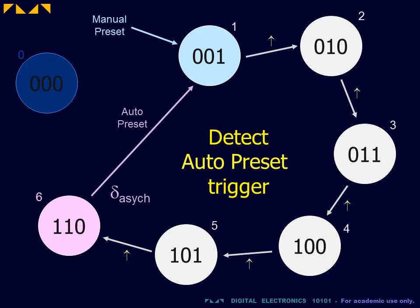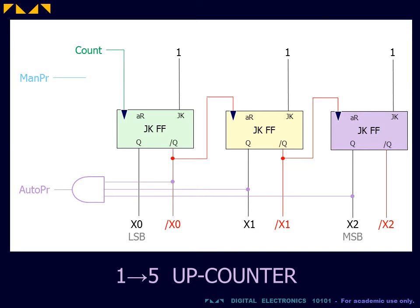Note that, as in the previous design, the auto preset will still be triggered by the 1 1 0 state. Hence, as before, the AND gate which provides the auto preset will detect the 1 1 0 count state.